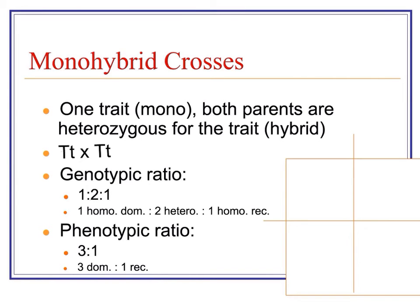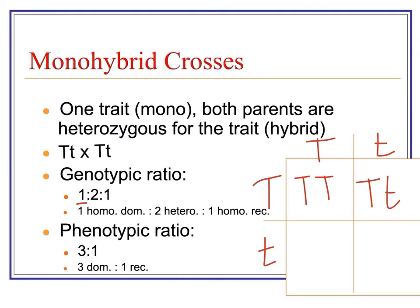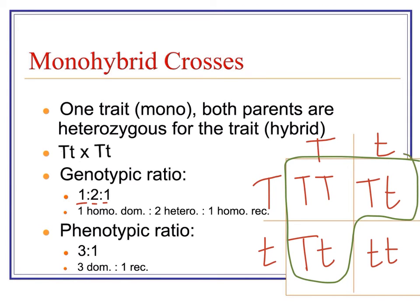The Punnett square we just looked at is an example of a monohybrid cross — mono meaning one trait — where both parents are heterozygous for that trait. We always get the same ratios. For example, if Mendel crossed two plants that were both heterozygous tall, one-fourth would be homozygous dominant, two-fourths heterozygous, and one-fourth recessive — that's the genotypic ratio of 1:2:1. The phenotypic ratio would be three-fourths tall and one-fourth short, a three-to-one ratio.